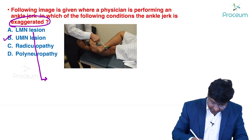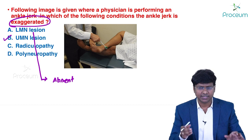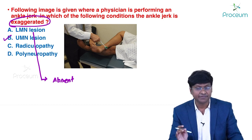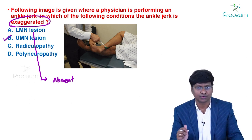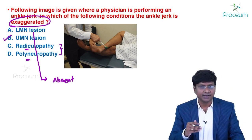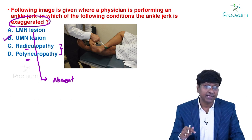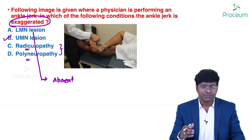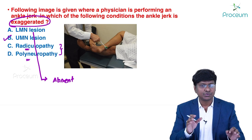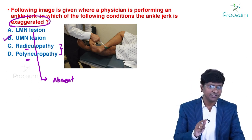In lower motor neuron lesion, the deep tendon reflexes will be absent. The lower motor neuron includes the anterior horn cell, nerve roots, peripheral nerves, neuromuscular junction, and muscle. Radiculopathy and polyneuropathy also come under lower motor neuron lesion. Upper motor neuron includes the cerebral hemisphere, corticospinal tract, and brain stem — in which you will have brisk or exaggerated reflexes.